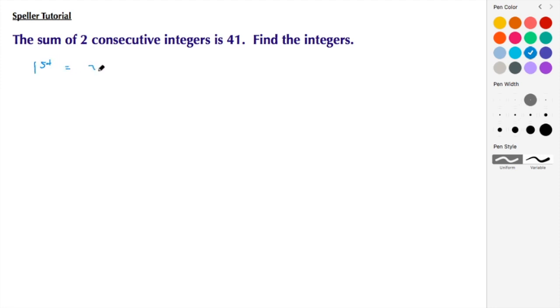for the first integer, we're going to say that's X. And for the second integer, we're going to say that's X plus 1 because we're looking for consecutive integers.